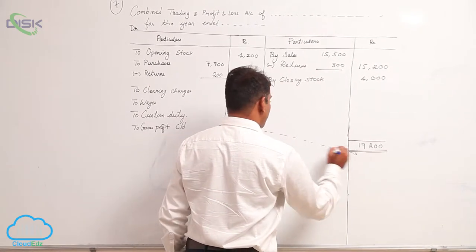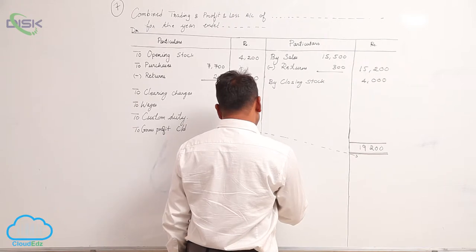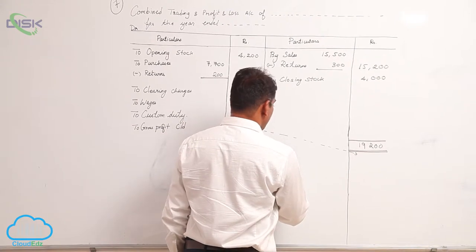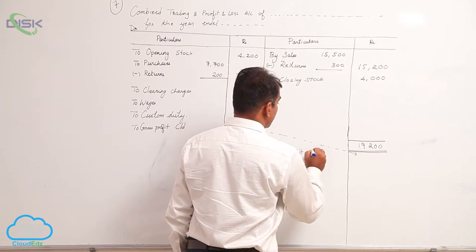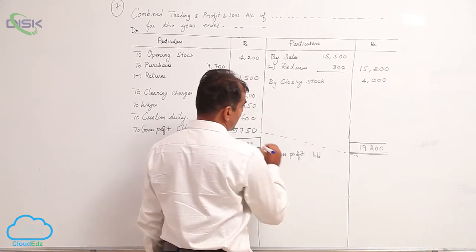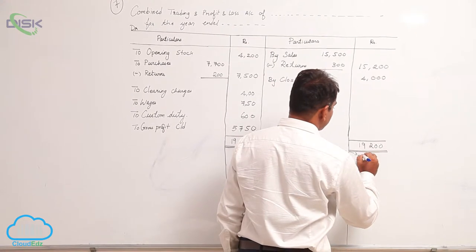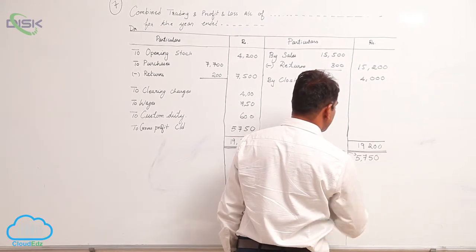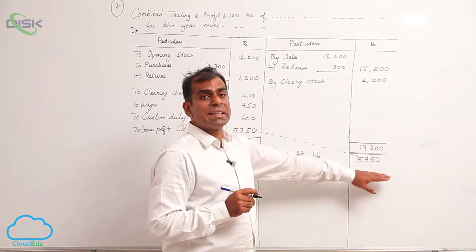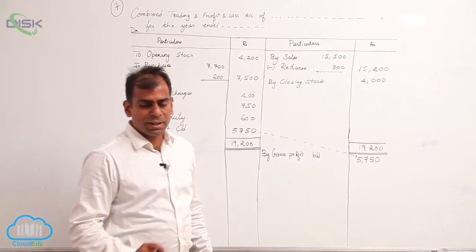I am taking the gross profit to the opposite side of P&L account and I am writing 'by gross profit brought down' which amounts to 5,750. There is a slight printing error in the textbook, so this is to be taken as correct gross profit.